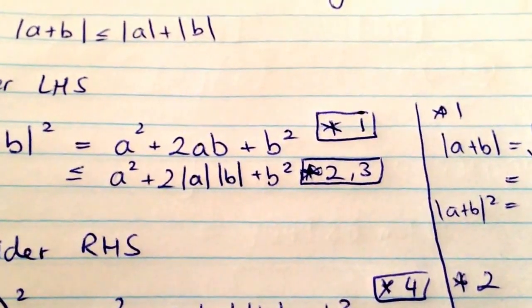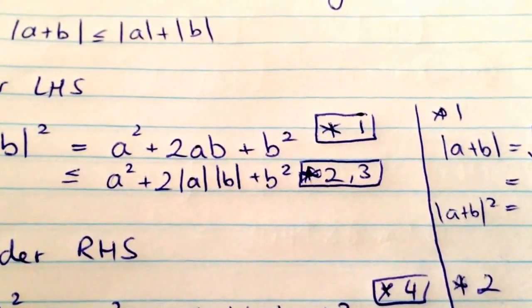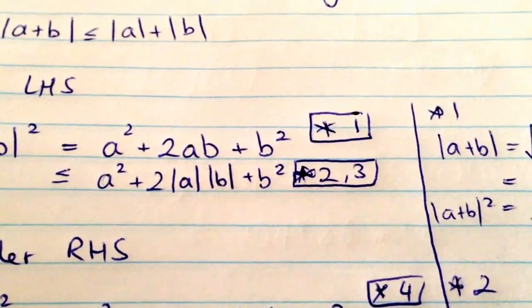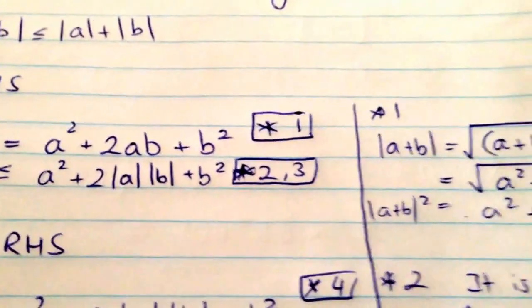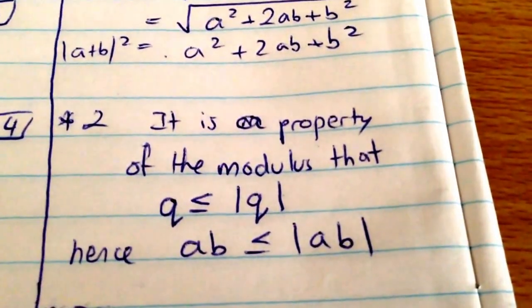So now, we're going to say that that's less than or equal to a squared plus 2 mod a mod b plus b squared. And look, I've got side note 2 and 3 there, so let's see what the side notes say. And again, you're probably wondering how I got there.